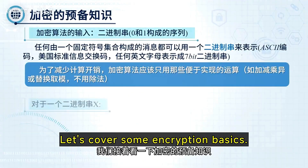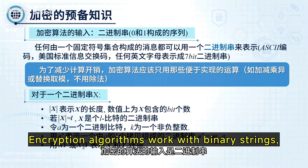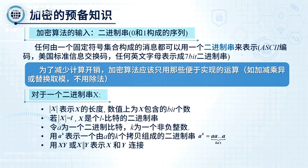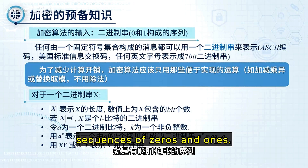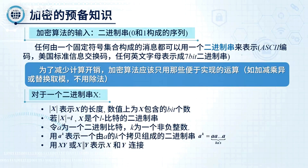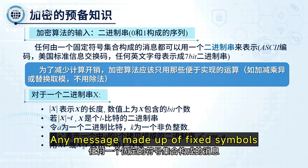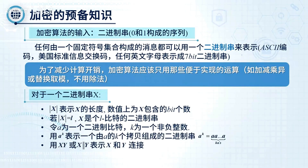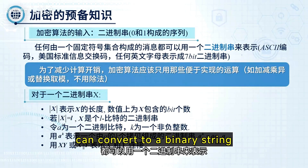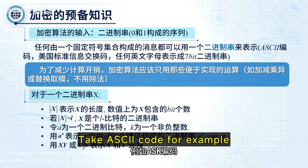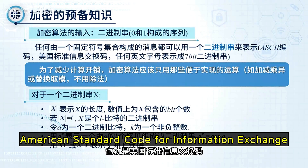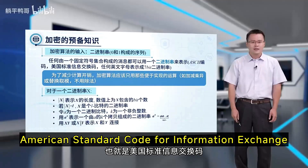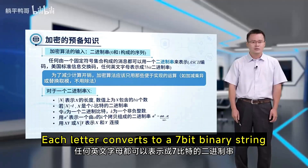Let's cover some encryption basics. Encryption algorithms work with binary strings — sequences of 0s and 1s. Any message made up of fixed symbols can be converted to a binary string. Take ASCII code for example — American Standard Code for Information Exchange — where each letter converts to a 7-bit binary string.